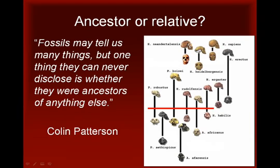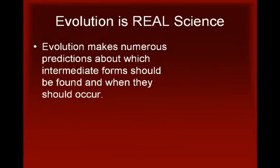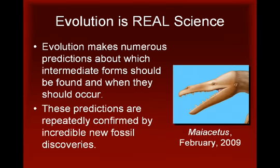Even though we cannot predict the exact combination of characteristics that should be found in an ancestral species, we can specify which sets of features must have changed and make predictions about what such changes would look like if evolution by common descent has occurred. Then we can look for fossils with those characteristics to test our predictions. Evolution is real science because it has been used to make innumerable such predictions about which intermediate forms should be found, and these predictions are repeatedly confirmed by incredible new fossil discoveries.